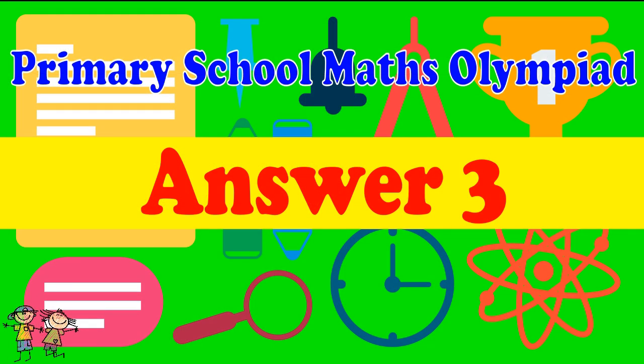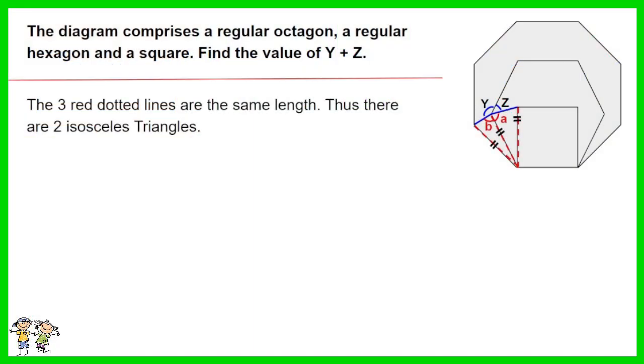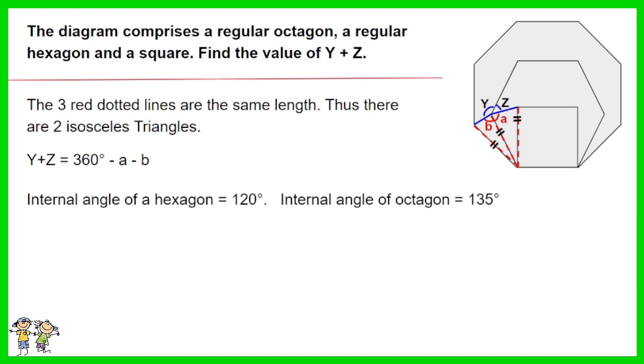Answer for question 3. The 3 red dotted lines are the same length. Thus there are 2 isosceles triangles. Y plus Z equals 360 degrees minus A minus B. The internal angle of a hexagon is 120 degrees. The internal angle of octagon is 135 degrees. D equals 120 minus 90 equals 30 degrees. C equals 135 degrees.